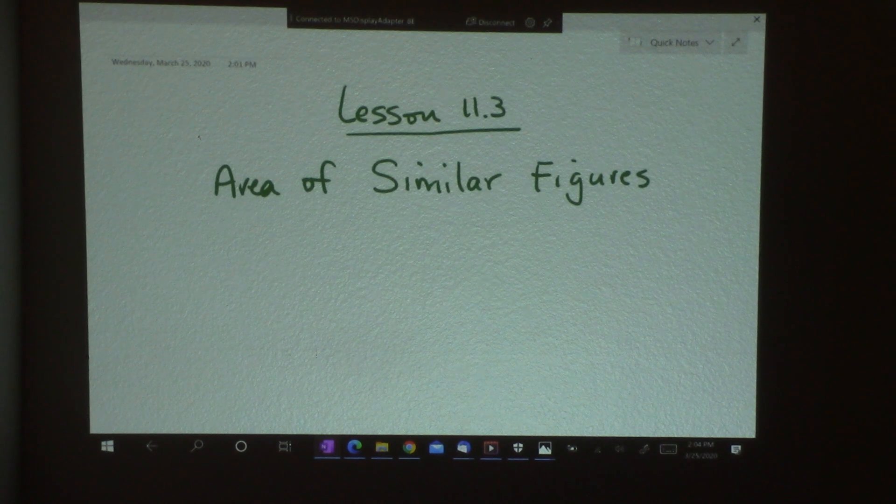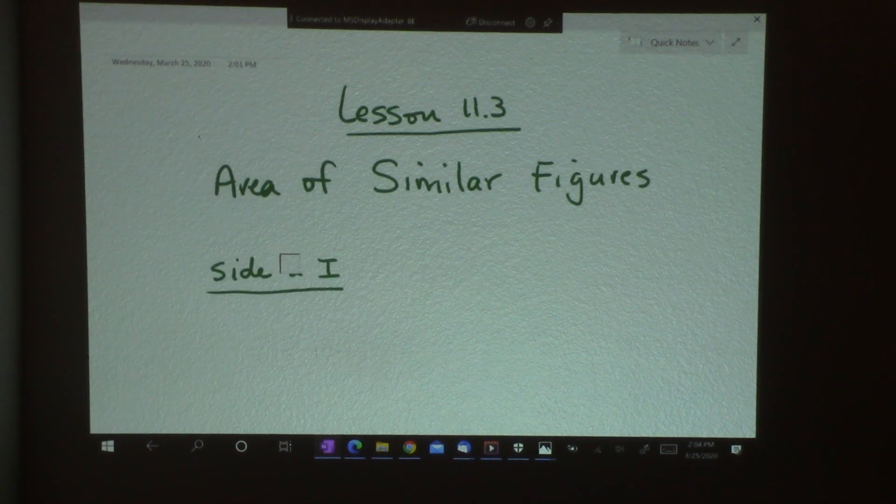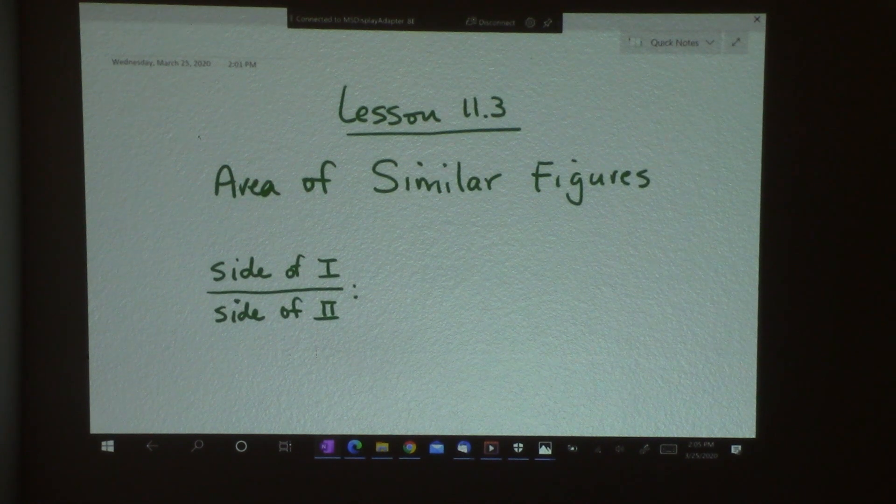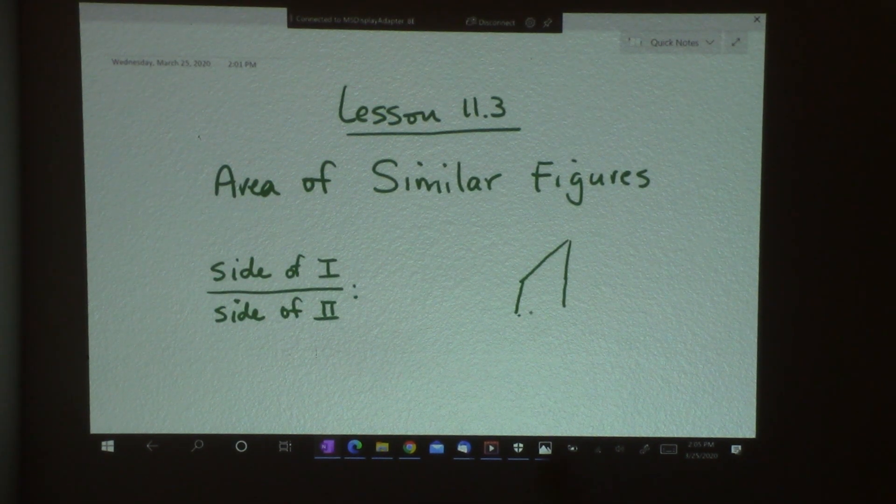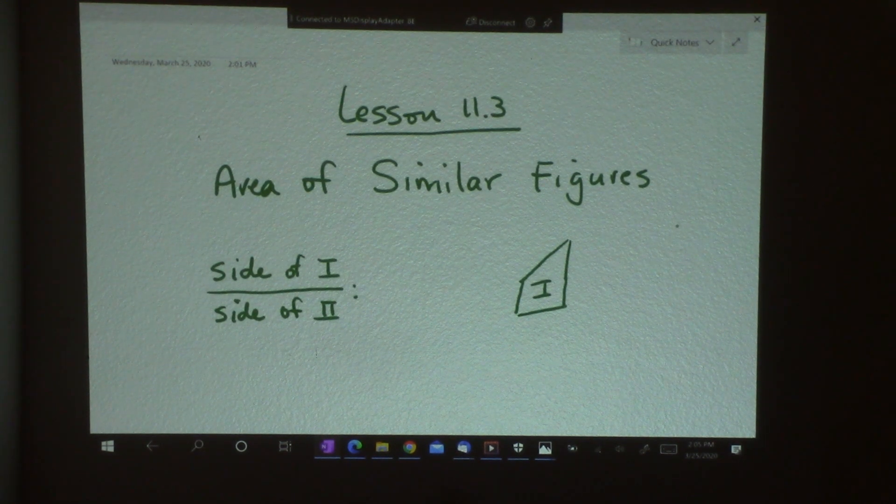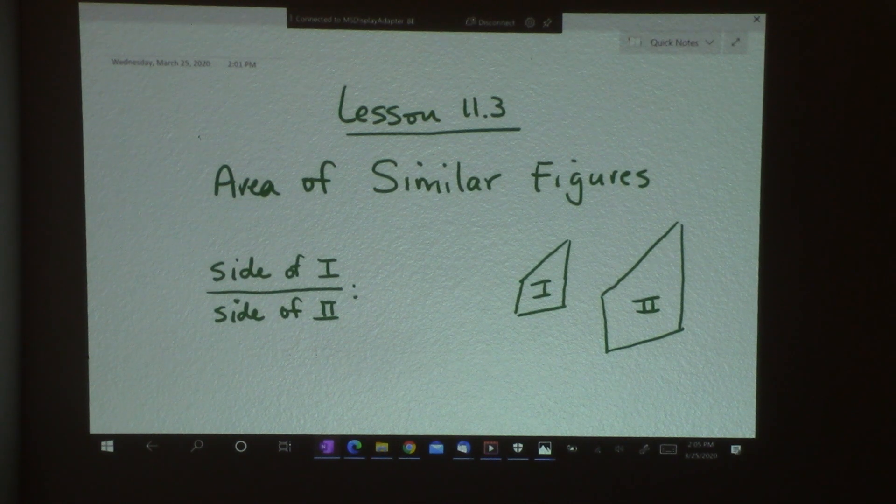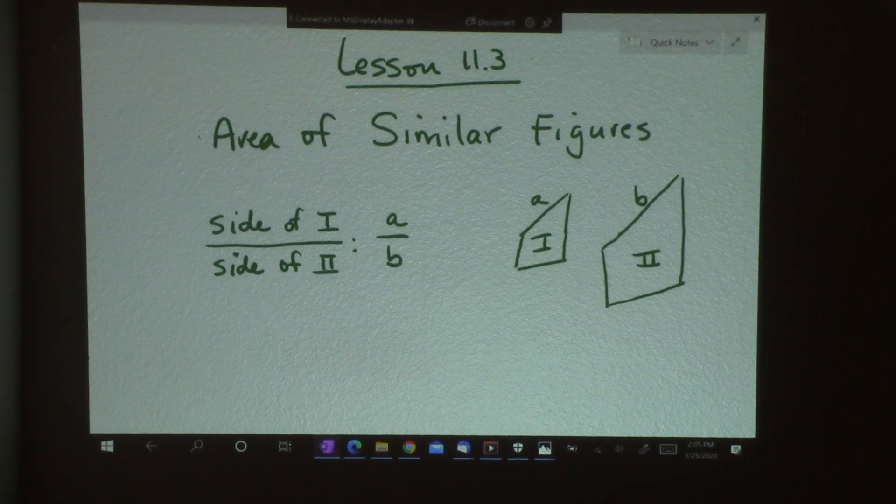The first thing I'm going to do is give you a formula. So if I have side of figure one over side of figure two, my ratio. Let's say I have one shape like this and a bigger one like this. Let's just pretend they're similar. And if this is A and this is B, then the ratio of the sides would be A over B. And we know that. We've worked with similarity and comparing with ratios before.